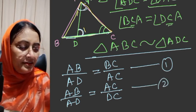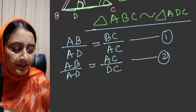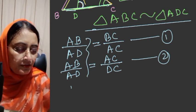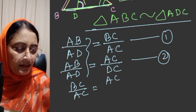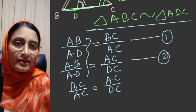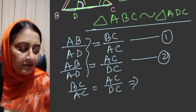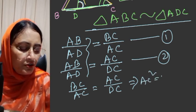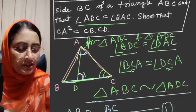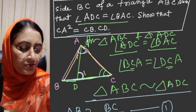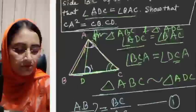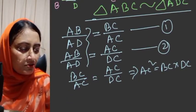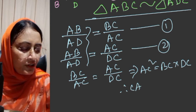This implies CA² is equal to BC into DC. The question asks to show CA² is equal to CB into CD, which is the same thing. Therefore CA² is equal to CB into CD. So proved.